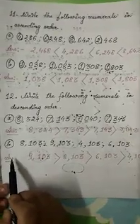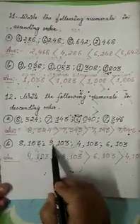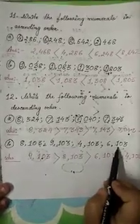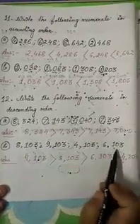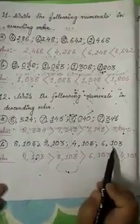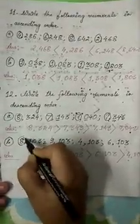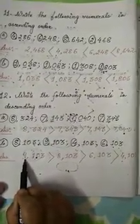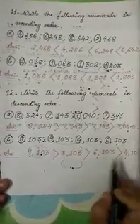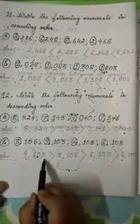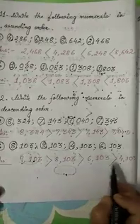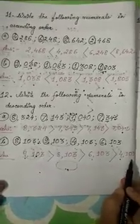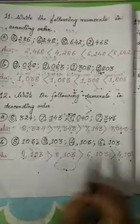Now let us do question number B: 8103, 9103, 4103 and 6103. We compare the digits at the leftmost place: 8, 9, 4 and 6. The number with 9 at its leftmost place is greatest, then 8, then 6 and then 4. So the order is 9103, 8103, 6103 and 4103. In this way we can arrange numerals in descending order. Question number C, D and E can be completed by you at your home.